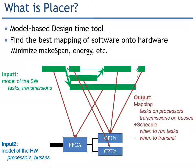Notice that the mapping also mentions when transmissions occur and on which buses they have to occur, in case you have several possible buses.